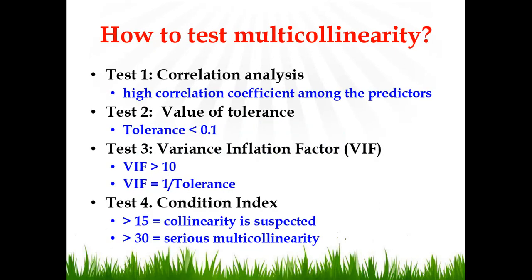How to test it? There are four basic tests and we will conduct all of them. The first one is correlation analysis. A high correlation coefficient among the predictors implies that multicollinearity is suspected. Heyer and colleagues in their book on multivariate data analysis suggest that if the correlation coefficient between two predictors is 1, there is complete collinearity; if it is zero, there is no collinearity at all. If the coefficient is 0.7 or above, you can suspect the issue.